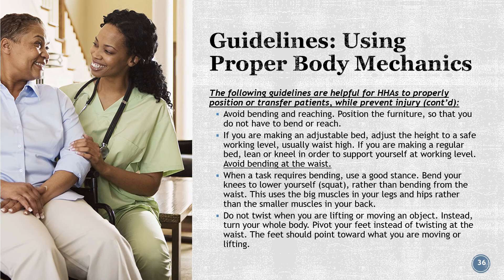Continued guidelines — avoid bending and reaching: position furniture so that you do not have to bend or reach. If making an adjustable bed, adjust the height to a safe working level, usually waist high. If making a regular bed, lean or kneel to support yourself at working level; avoid bending at the waist. When a task requires bending, use a good stance — bend your knees to lower yourself and squat rather than bending from the waist, using the big muscles in your legs and hips rather than the smaller muscles in your back. Do not twist when lifting or moving an object; instead, turn your whole body. Pivot your feet instead of twisting at the waist — feet should point toward what you are moving or lifting.